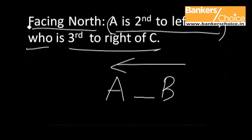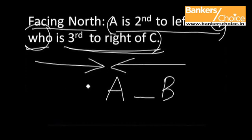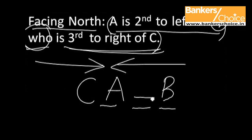And the second part of the statement is who is third to the right of C. Whenever the word who is used, the person referred is immediate before. That is B in this case. So we can say that B is third to the right of C. As B is towards the right of C and three places away, C should come here. So that B becomes one, two and three places away.